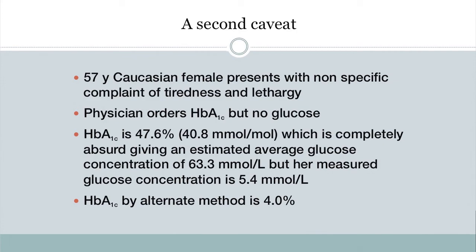Here's a second caveat: a 57-year-old Caucasian female presenting with non-specific complaints of tiredness and lethargy. The physician orders hemoglobin A1c following society guidelines, and we obtain a value of 47.6% — phenomenally high. That's completely absurd, as the estimated average glucose would be 63.3 mmol/L (well over 500 mg/dL). However, when we measured her glucose, it was only 5.4 mmol/L. We tested by an alternative method and got 4.0%, much more consistent with her glucose.